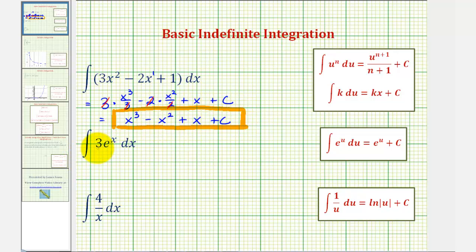Next we have the integral of three e to the x integrated with respect to x. So this would be equal to three times the integral of e to the x, which is just e to the x. So we have three times e to the x plus c or three e to the x plus c. This family of functions would have a derivative of three e to the x.